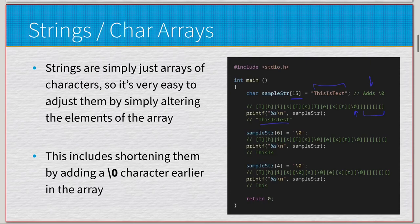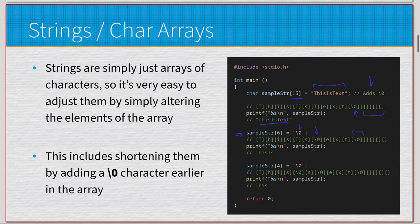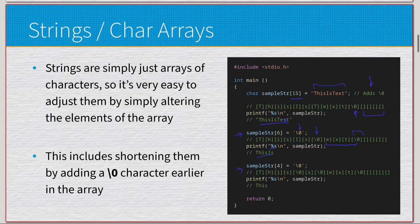If we print it we get 'this is text'. Here in sample string, setting the sixth character equal to a null character — instead of the one at the back — is where the string will stop. So 'this is' followed by a null character: if we print this out, even though there's still 'ext' and another null character further back, because we're printing the string it just goes up to the first null character, stopping at 'this is'. We repeat it by setting a null character after 'this' and we print out just 'this'.